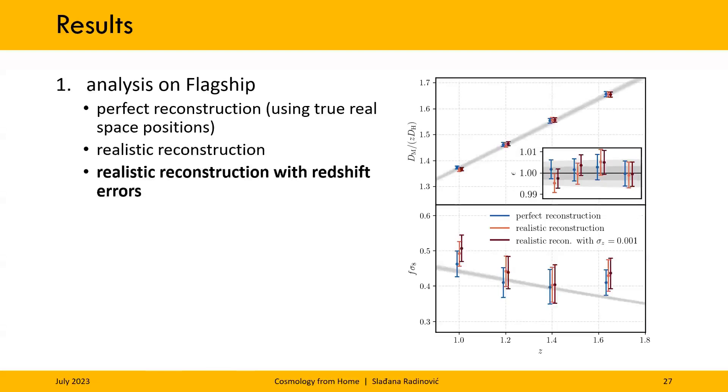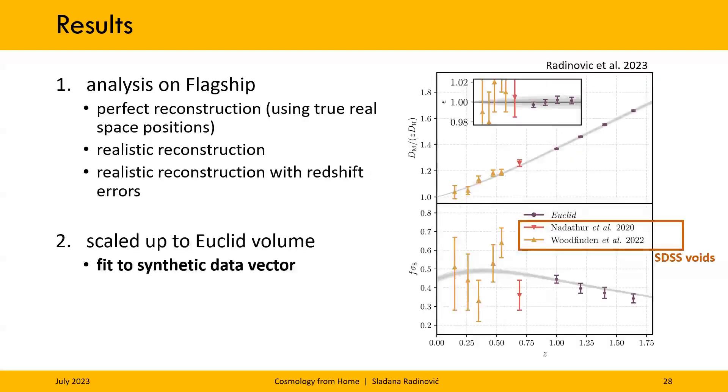Finally, we add in a Gaussian error at the very beginning to the observed redshifts, and then run the whole pipeline with the reconstruction, again, obtaining the constraints in dark red, which are again in agreement with the other two cases, meaning that the redshift errors added are also not significantly affecting our results. We then rescaled our covariance matrix up to the full Euclid volume, because the flagship volume is smaller than the expected full Euclid one. And we constructed a synthetic data vector so that we could obtain an actual forecast for Euclid.